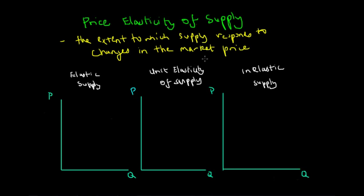Like the price elasticity of demand, the price elasticity of supply can be split up into three different categories. Firstly, we have an elastic supply curve. Secondly, we have unit elasticity of supply. And thirdly, we have an inelastic supply curve.